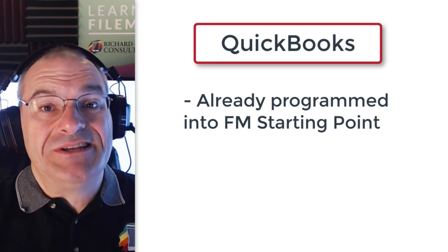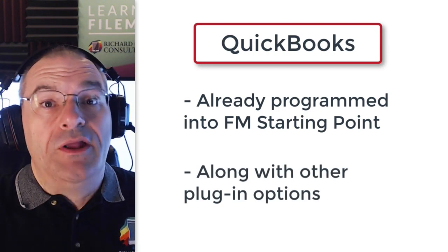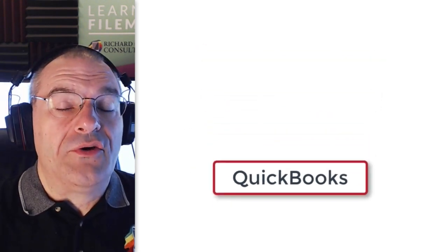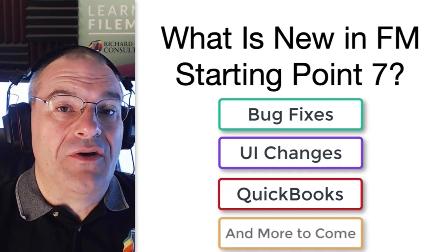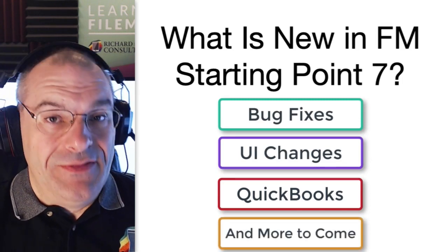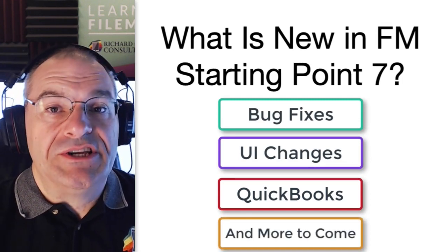Of course, you can implement just the pieces you want, or don't implement any of them — it's up to you. We're also considering another update to FM Starting Point 7 later in the year. We're talking to 360 Works about supporting their Mirror Sync technology directly, which would more easily allow FM Starting Point to have offline synchronization between mobile distributed users. That's a future thing we're kicking around, but it's fairly safe to say we're going to be doing this. I just wanted to give you a heads up of what to expect in the coming months.